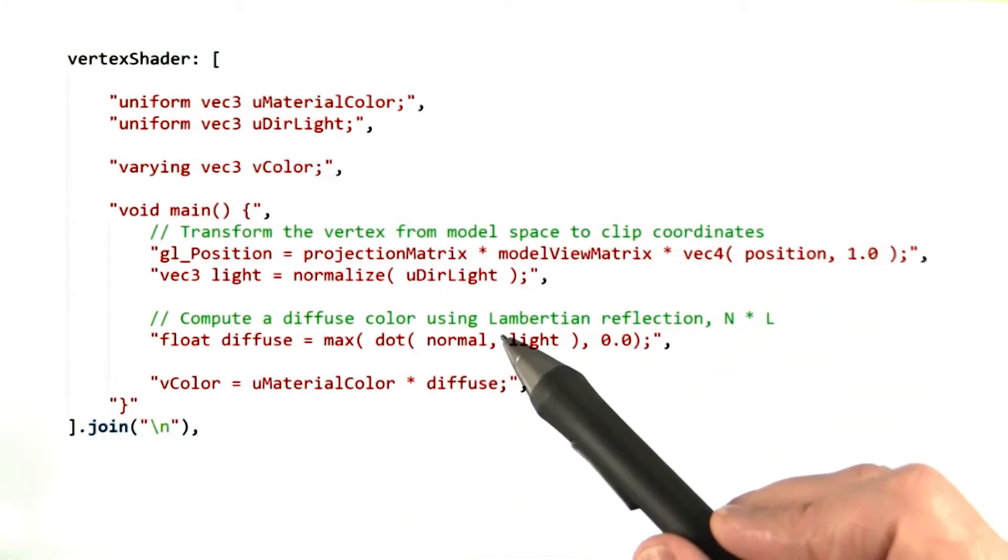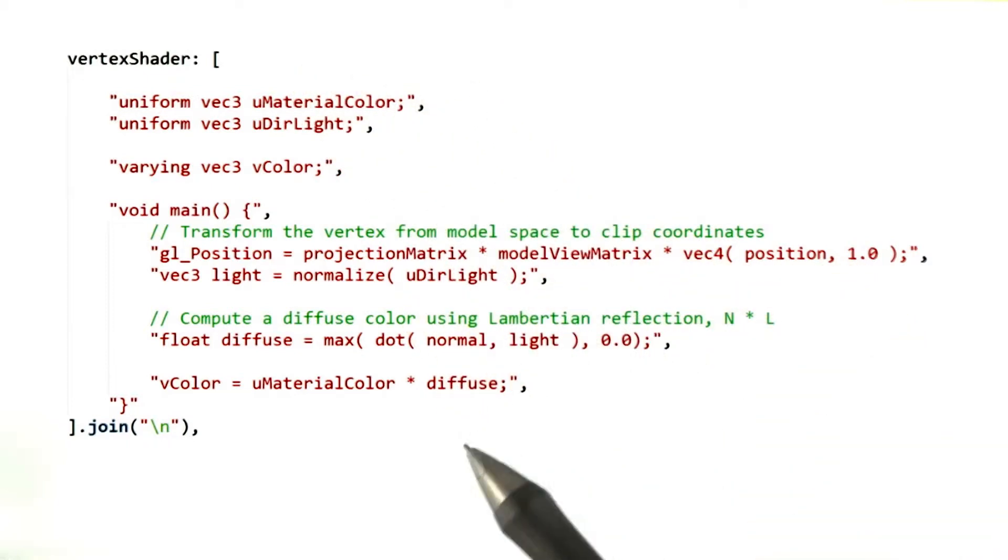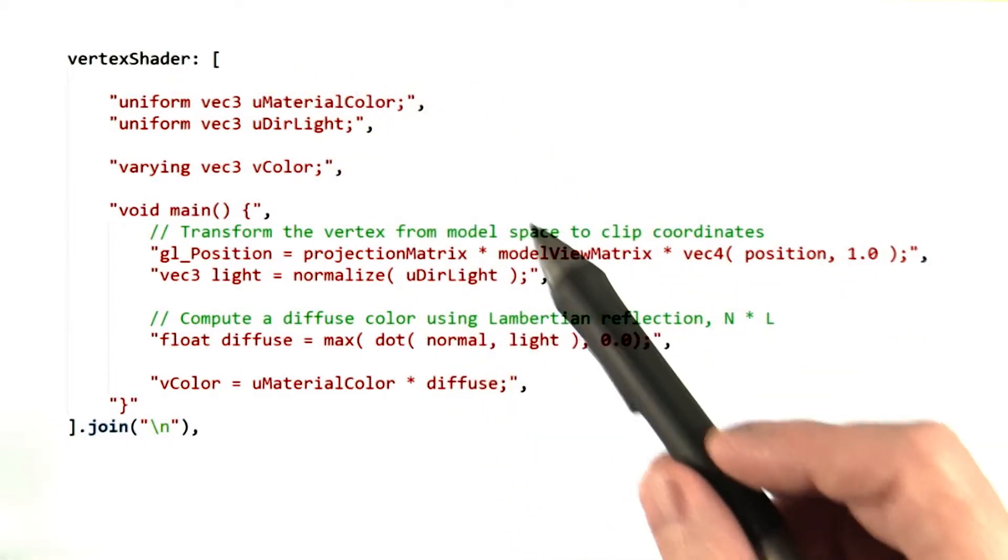Here's how to create a shader string in JavaScript. The first line is how JavaScript says it's going to define an array. What we're doing here is defining a string for each line of our program.